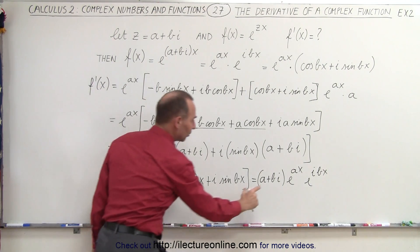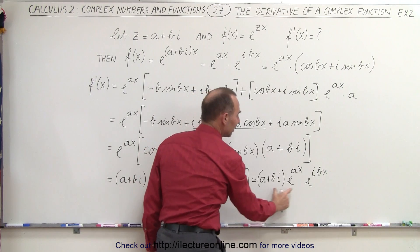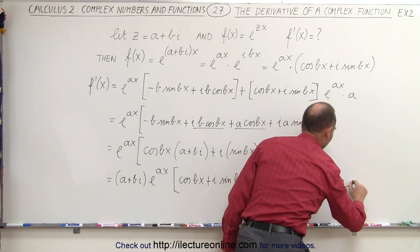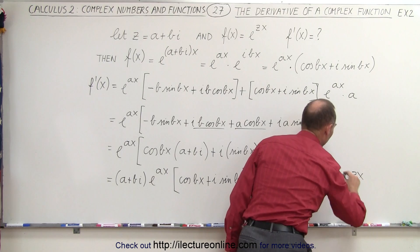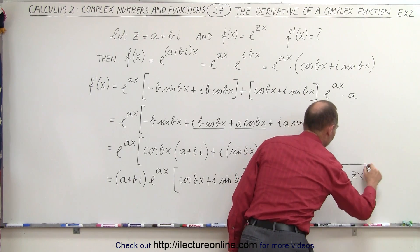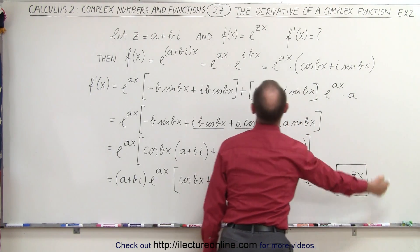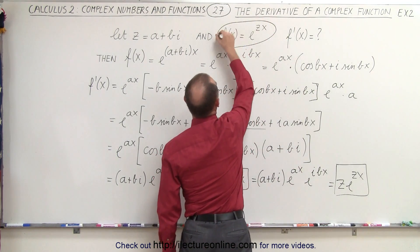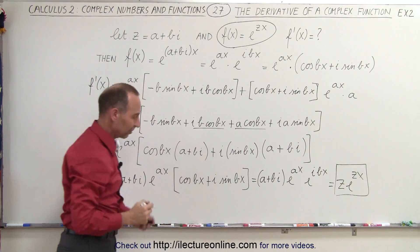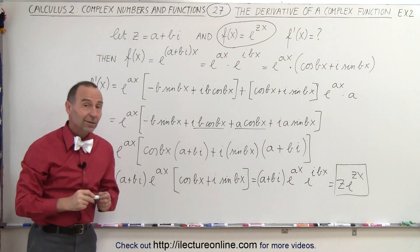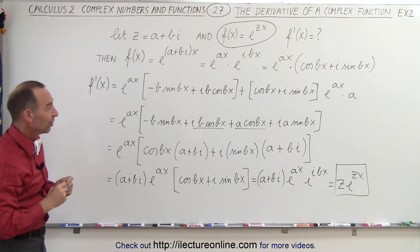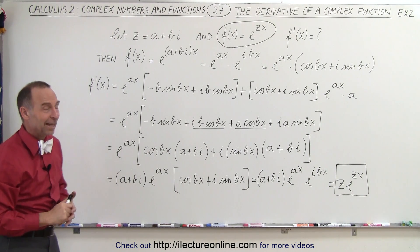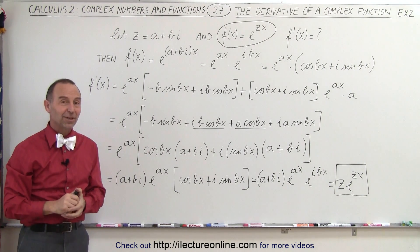And a plus bi is also equal to z. So this can be written as z times e to the zx, which means that this is the derivative of our original function f(x) equals e to the zx. So again, we came up with this exact same result by doing it a little bit differently. And that's how it's done.